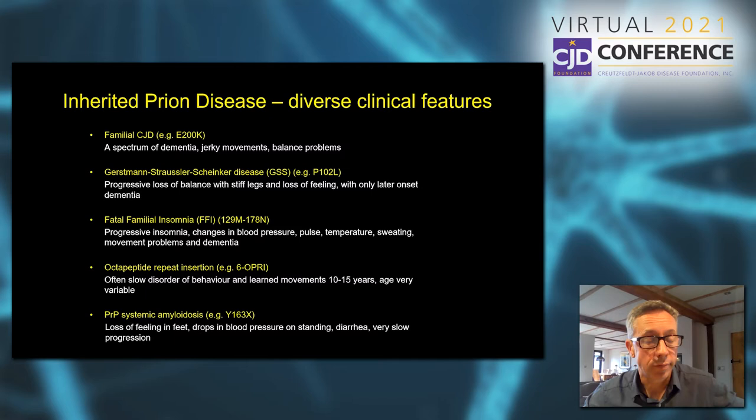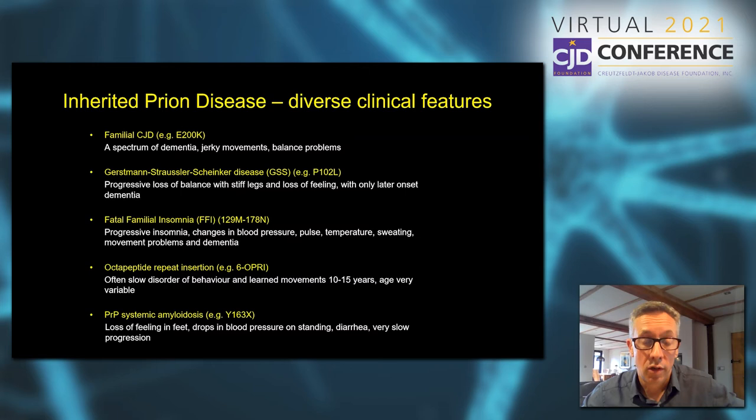Perhaps the next most common is Gerstmann-Sträussler-Scheinker disease, and this refers to something quite different — a progressive loss of balance associated with stiff, painful legs, often with loss of feeling in the legs. Only later in the disease do thinking skills become affected, and that's typically associated with a mutation at position 102, P102L.